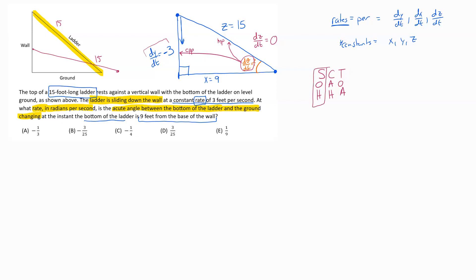Opposite and hypotenuse is a sine setup. So we would set that equation up. We would say the sine of theta equals - and we don't want the numbers, we just want the equation. So this would be y is this left side over here. That's the wall. So the opposite is y over the hypotenuse is z.